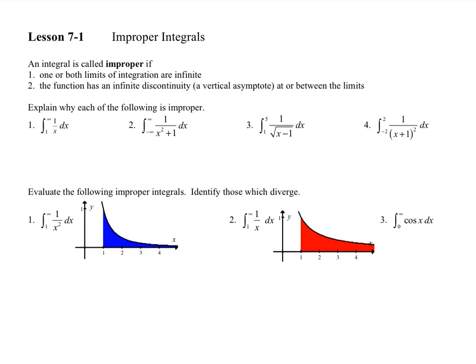Hi, this is lesson 7.1 BC Calculus, and we want to deal with improper integrals. An integral is called improper if one or both limits of integration are infinite — you'll see one there and a couple there — and also if the function has an infinite discontinuity, in other words a vertical asymptote at or between the limits.